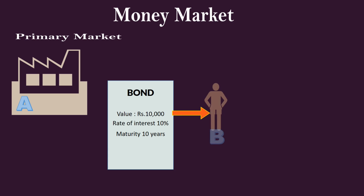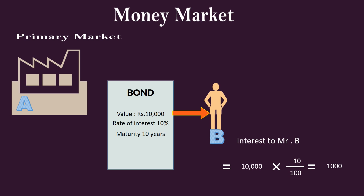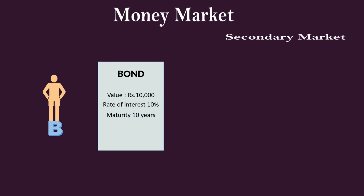This bond is bought by individual B. He is the first buyer of the bond, so he pays the face value of 10,000 rupees and becomes the owner. He keeps it for two years and enjoys the interest income of 1,000 rupees per annum. At the end of the second year, B is badly in need of money and decides to sell the bond.